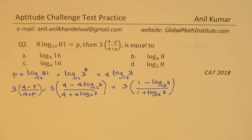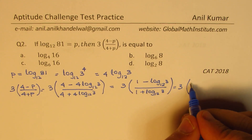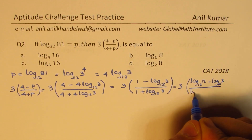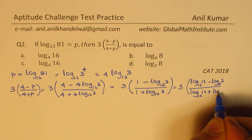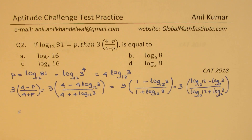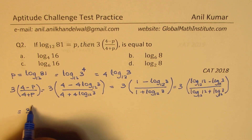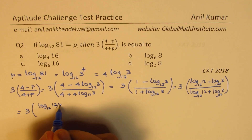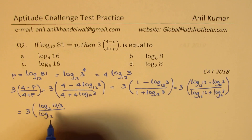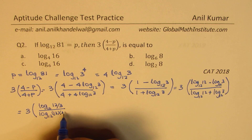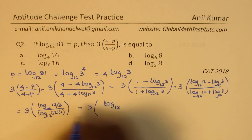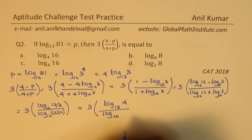At this stage we rewrite 1 as log to the base 12 of 12, so the numerator becomes log base 12 of 12 minus log base 12 of 3, and the denominator becomes log base 12 of 12 plus log base 12 of 3. Using log properties, subtraction becomes division and addition becomes multiplication: we get log base 12 of (12/3) over log base 12 of (12 times 3), which is log base 12 of 4 over log base 12 of 36.